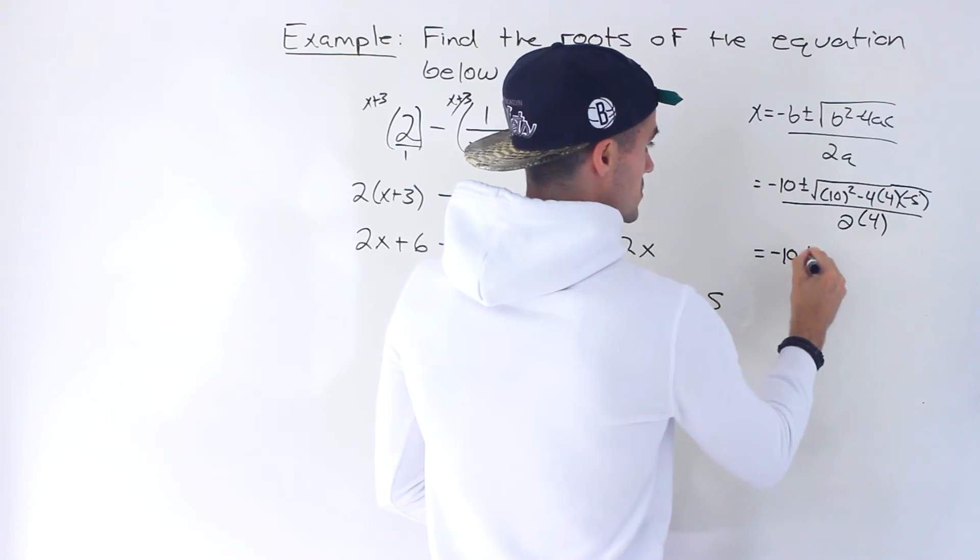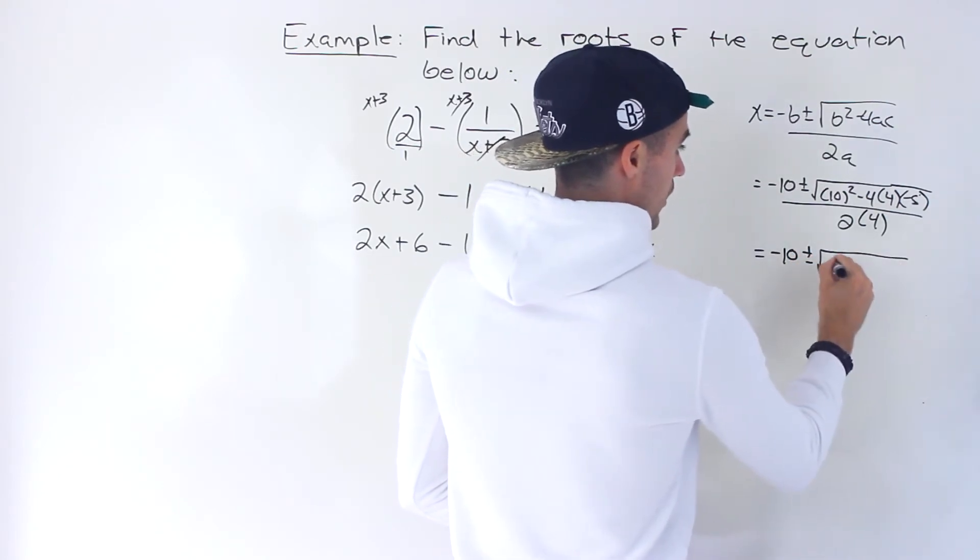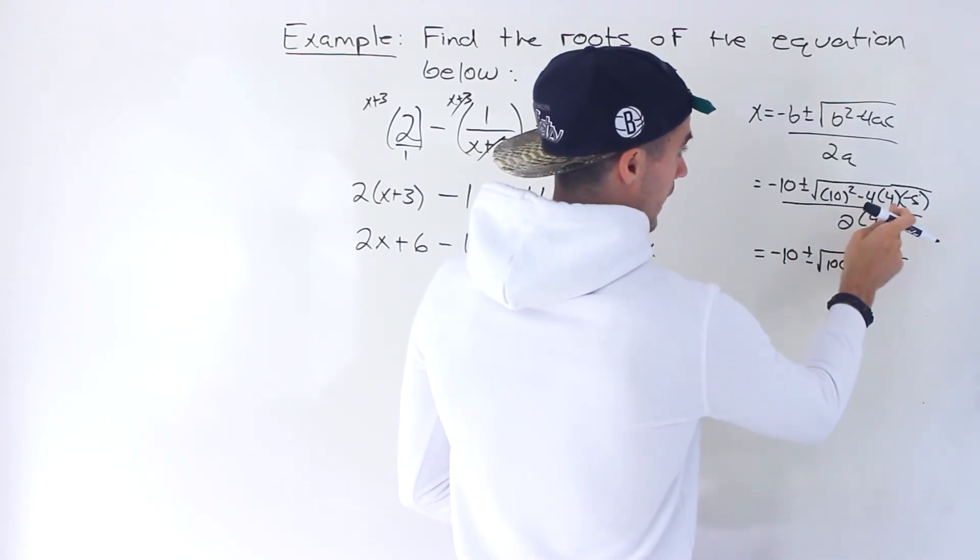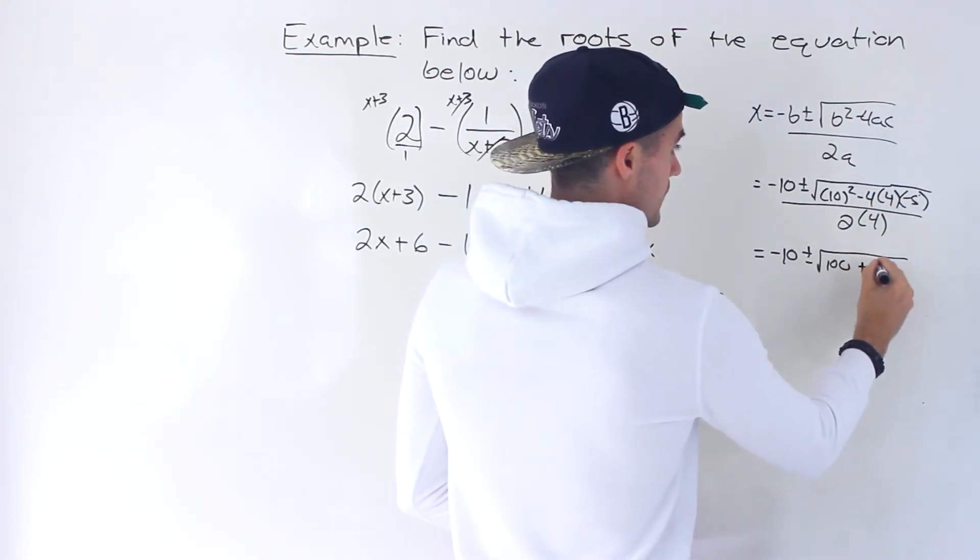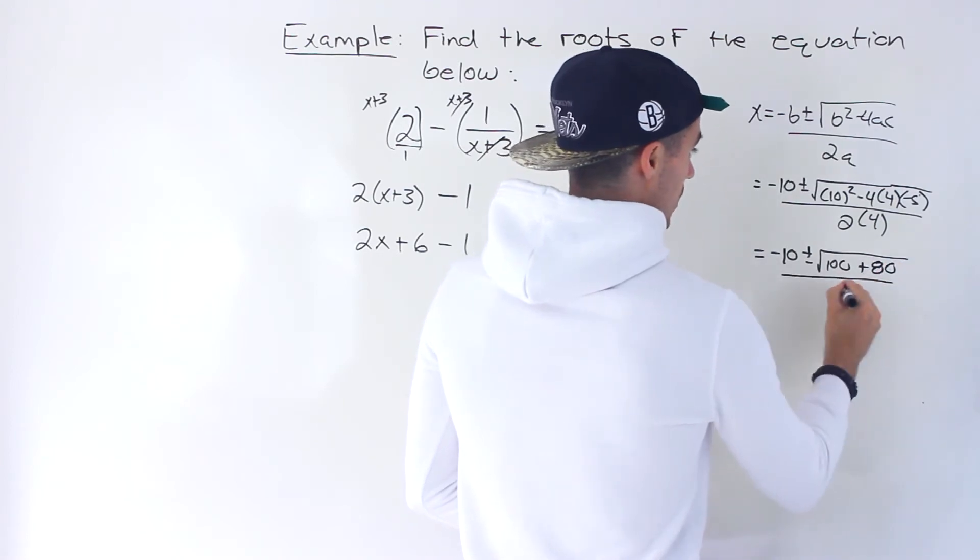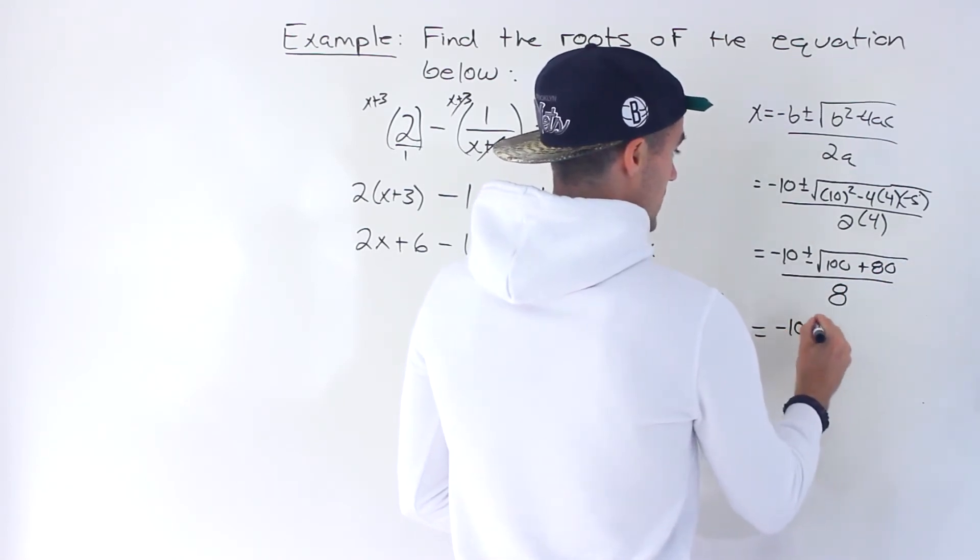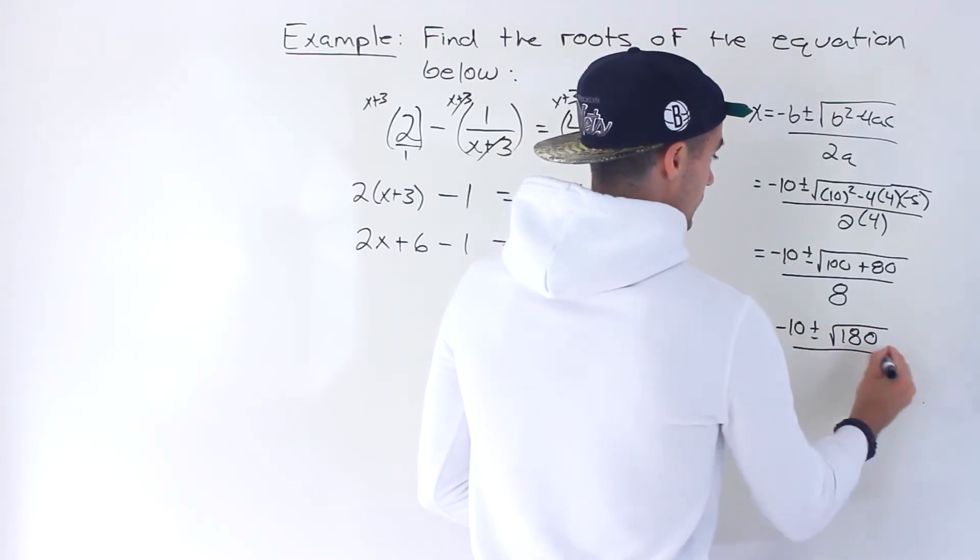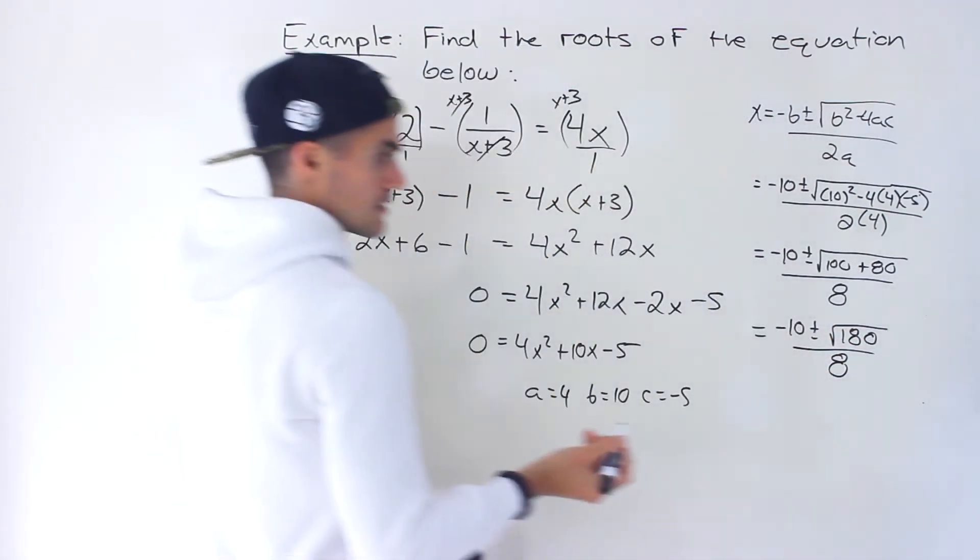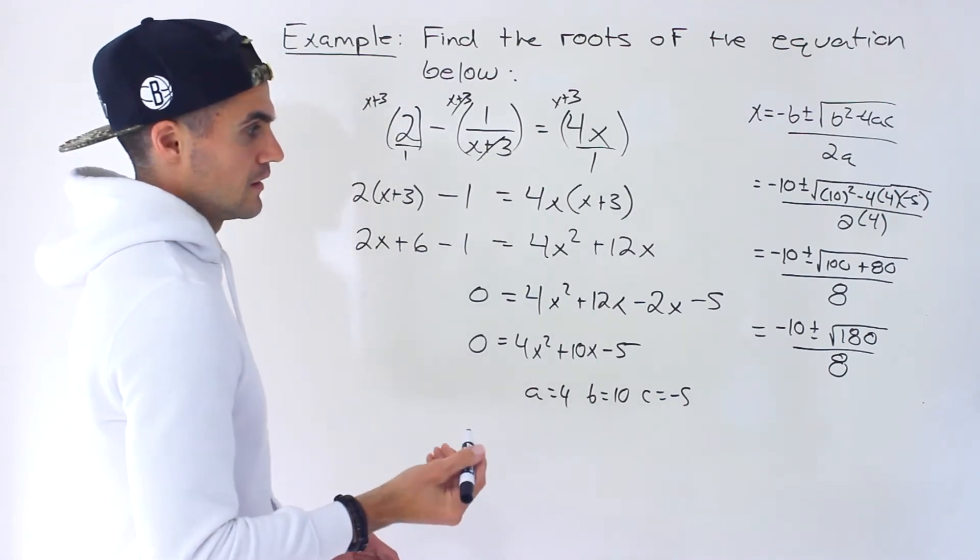So we'd have negative 10 plus or minus. Over here we'll have 100. And then we'll have negative 16 times negative 5 which would give us positive 80. And this is going to be all over 8. So we have negative 10 plus or minus root 180 over 8.